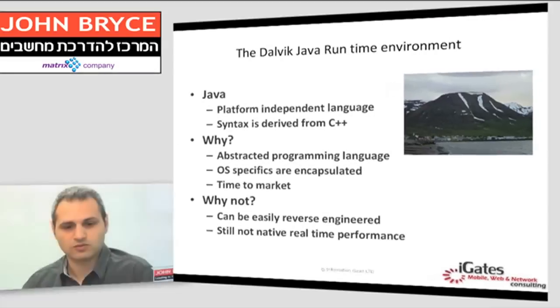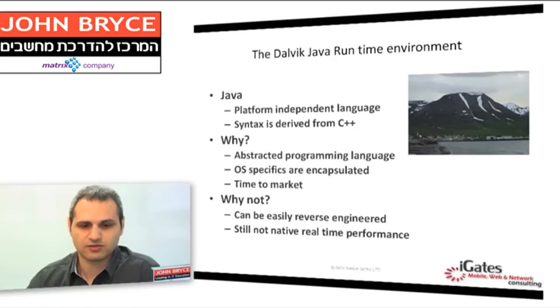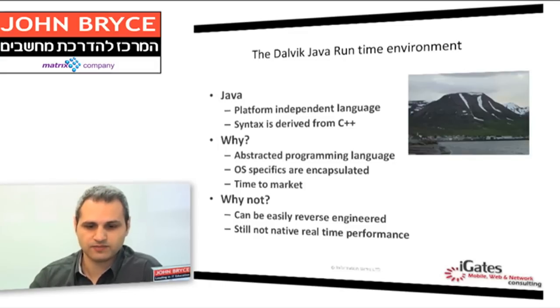Let's talk about Java. What is Java and why do we need it? Java is a platform-independent language — kind of like the .NET equivalent from Microsoft. The syntax is derived from C++. It is an abstract programming language where OS specifics are encapsulated, so you don't have to deal with drivers or other issues related to specific manufacturers. In the next slides I will show how to easily develop applications in the Dalvik Java runtime.